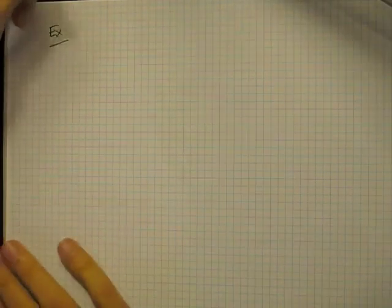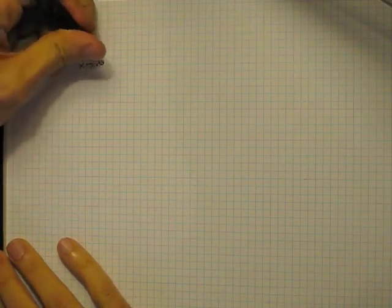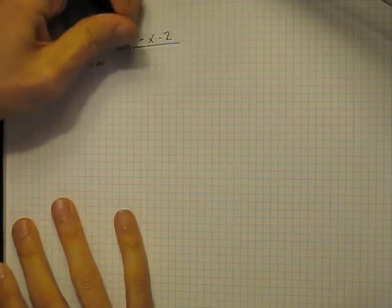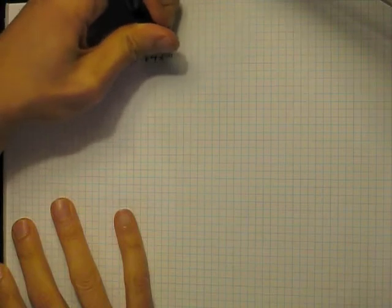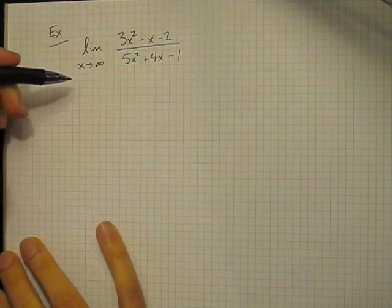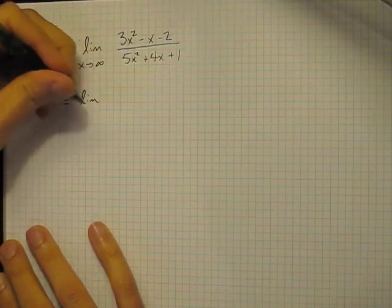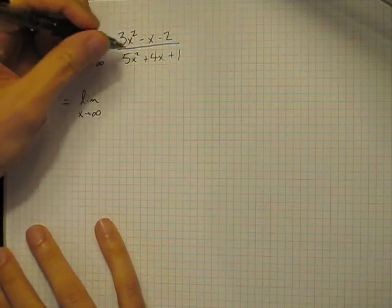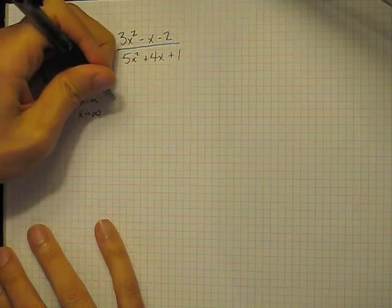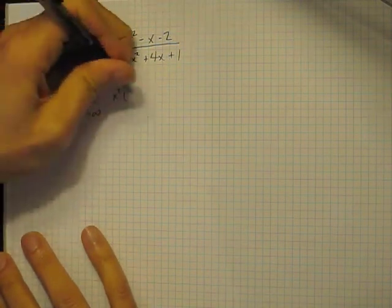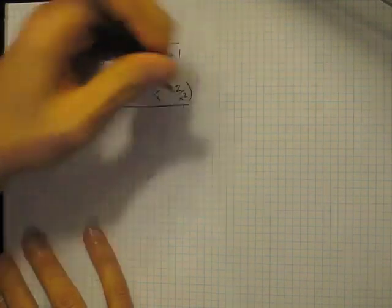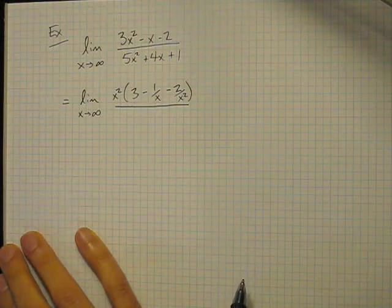Let's look at a real example. Let's investigate the limit as x goes to infinity of the following ratio: 3x squared minus x minus 2 divided by 5x squared plus 4x plus 1. So this is a rational function. We want to analyze what its behavior is as x becomes larger and larger. We manipulate this in very much the same way that we would manipulate a regular limit. I'm going to pull the highest power of x from the numerator and the denominator. If I factor an x squared from the top, I get 3 minus 1 over x minus 2 over x squared.